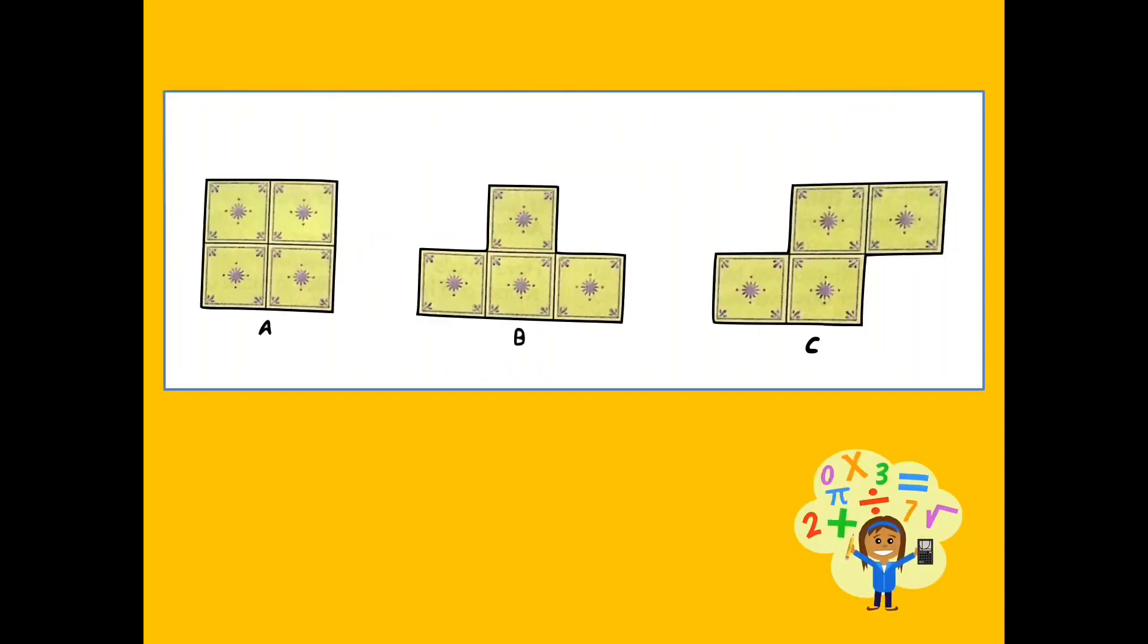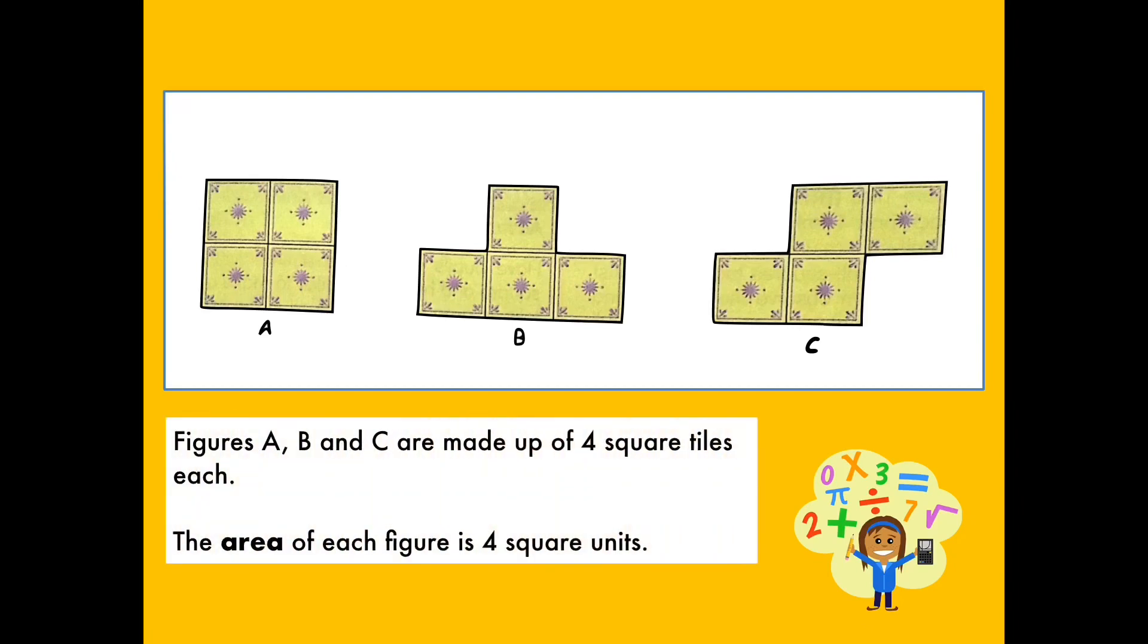Let's look into the next figure. Errol makes the following figures using square tiles. How many pieces of square tiles make up figure A? How about figure B? Figure C? Figures A, B, and C are made up of four square tiles each. The area of each figure is four square units. Always remember that area is the amount of surface covered by the tiles.